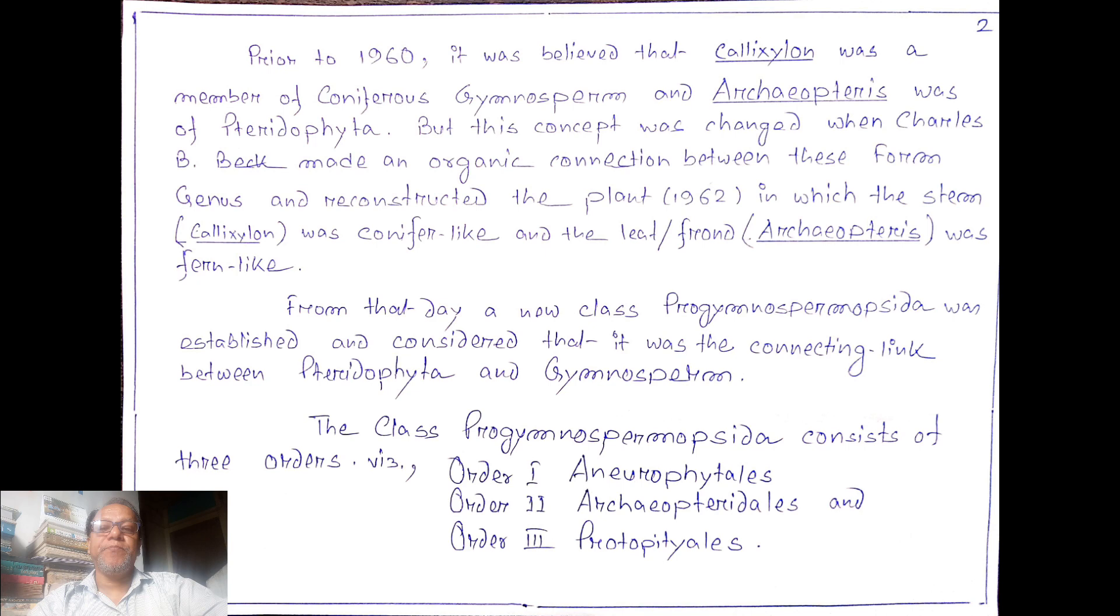Prior to 1960 it was believed that Callixylon was a member of coniferous gymnosperm and Archaeopteris was a pteridophyta. But this concept was changed when Beck made an organic connection between these two forms and reconstructed the plant in 1962, in which the stem Callixylon was conifer-like and the leaf Archaeopteris was fern-like.